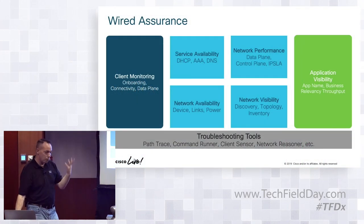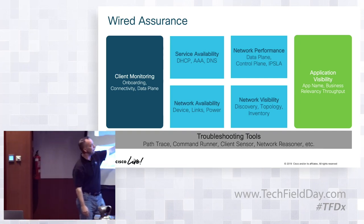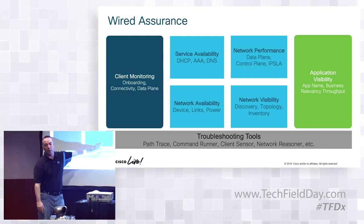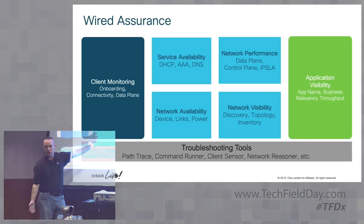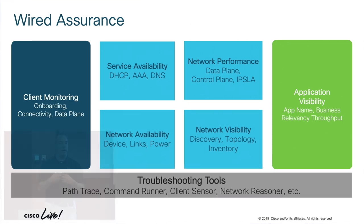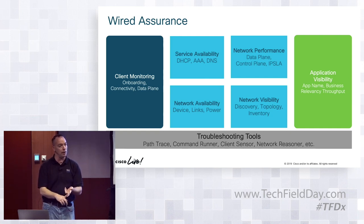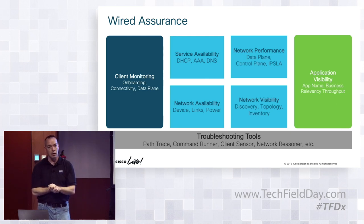There are a lot of elements here. Things you'd expect — troubleshooting, network availability — can come from any solar winds or HP OpenView. What's really unique is client monitoring and application visibility. The switches and routers are doing streaming telemetry, giving you real-time information: Sean Wargo has logged in, he's on port number 12, here are the link statistics, he used AAA to log in, he got a DHCP address — all in a time-event sequence.